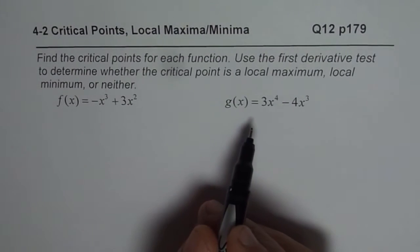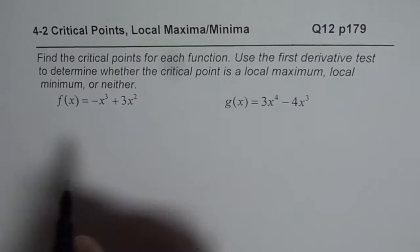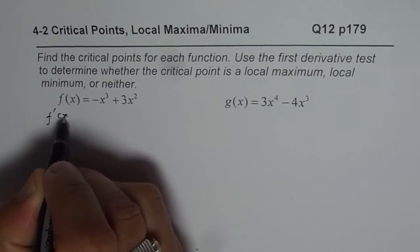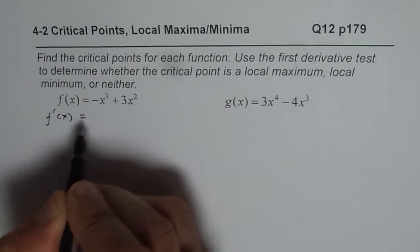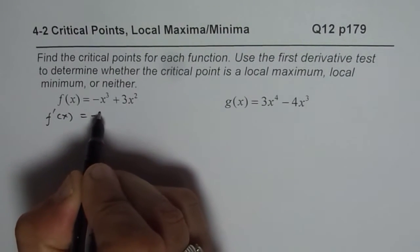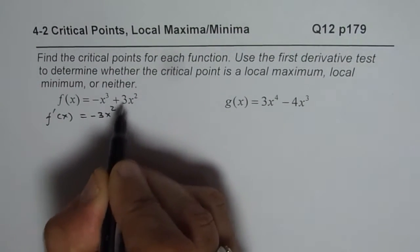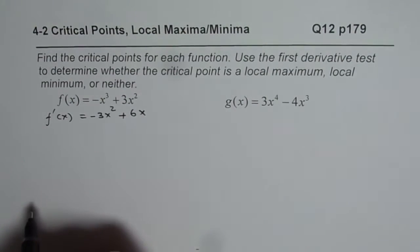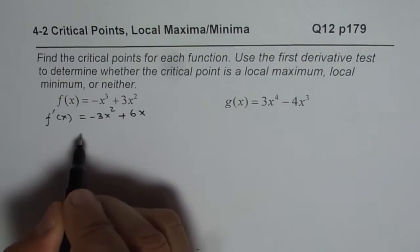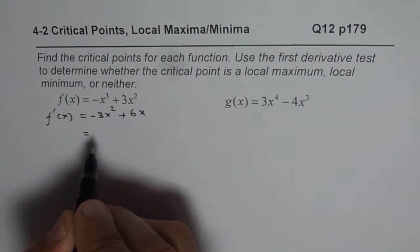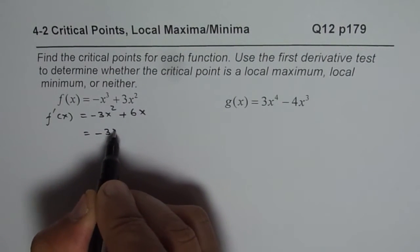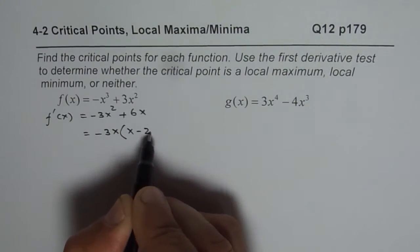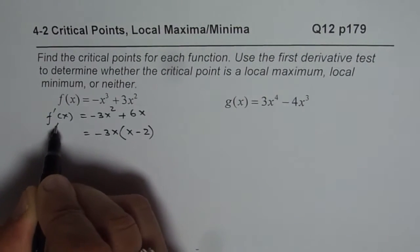In such questions, the first thing is to find the critical point. That means we find the derivative of the given function. The derivative in this case is minus 3x squared plus 6x. It is a good idea to factor the derivative, so we factor by taking minus 3x common, giving us x minus 2.